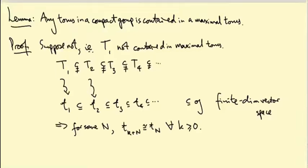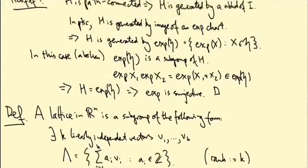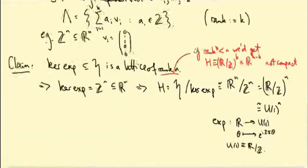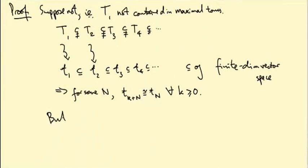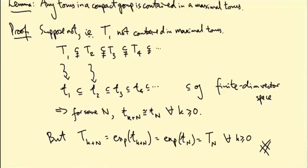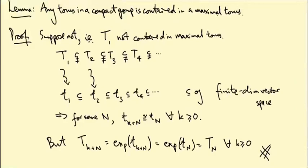But we saw earlier in one of the proofs that an abelian matrix group is exp of its Lie algebra. So that's telling us that T_{k+N} equals exp of little t_{k+N}, and this equals exp of little t_N, which equals big T_N for all k greater than or equal to 0. And that's an equality, not a strict inclusion. So this is a contradiction. We're supposed to have this sequence of tori getting strictly bigger each time. The Lie algebras have to stabilize at some point, and that means the tori have to stabilize at some point.